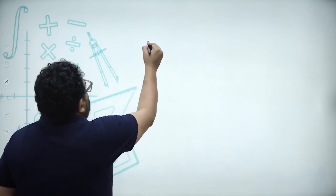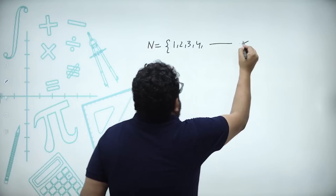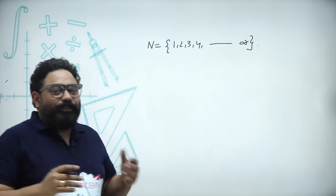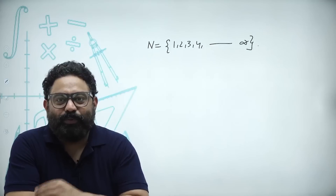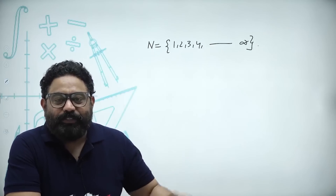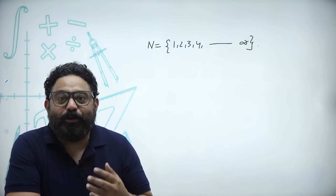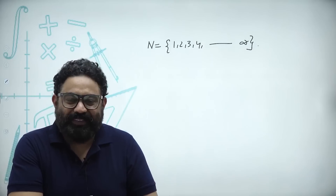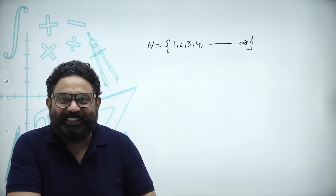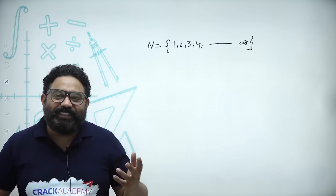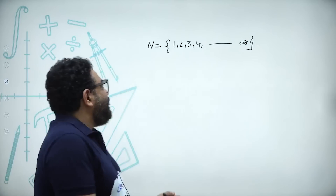First, what are natural numbers? One, two, three, four — till infinity. These are all counting numbers. When I say counting numbers, think: how many dogs do you have — four dogs, how many toffees — ten toffees. We can't talk about fractions or decimals here, and zero is not included in natural numbers.